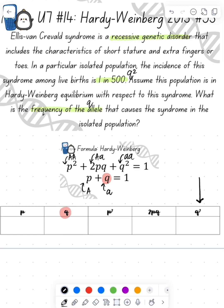We know that 1 in 500 is giving us the q² value. So 1 divided by 500 is 0.002. Since that is my q², I now want to solve for my q. So take the square root of q², and that gives me q. Square root of 0.002 gives me 0.0447.